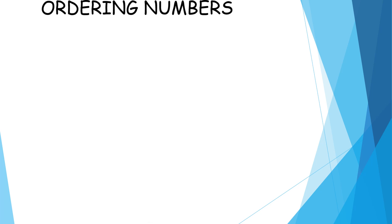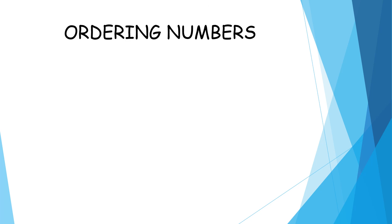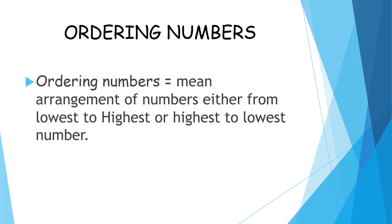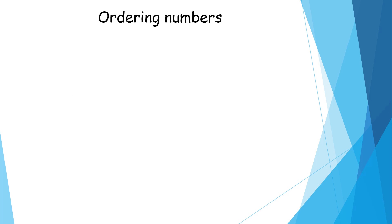Now it's time for our proper lesson in mathematics. The lesson is all about ordering numbers. What is ordering numbers? Ordering numbers mean arrangement of numbers either from lowest to highest or highest to lowest number. The ways in arranging numbers are called ascending order and descending order.